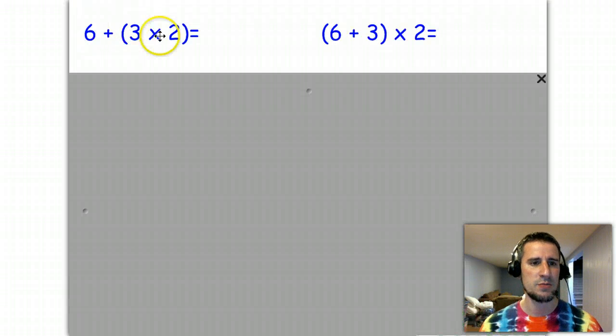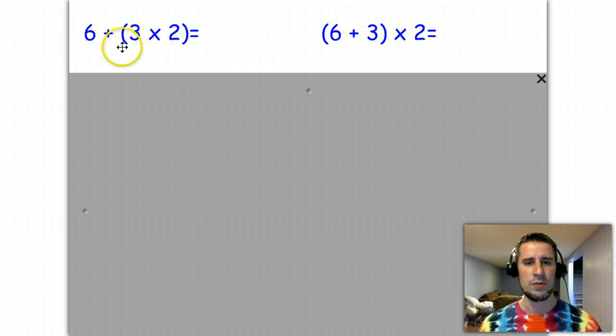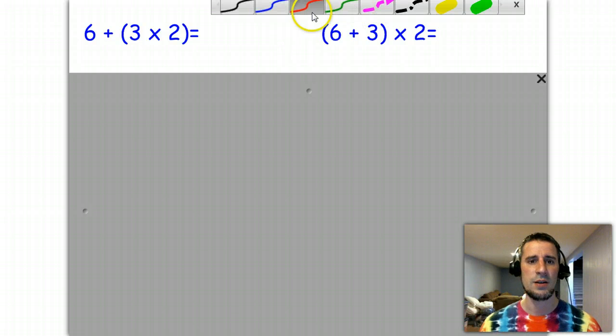What I mean by number sentences - we've used numbers like this before, like 6 plus 3 times 2. Notice the same number sentence over here. This time we have parentheses that are in place, and that's going to change our answer and our outcome.